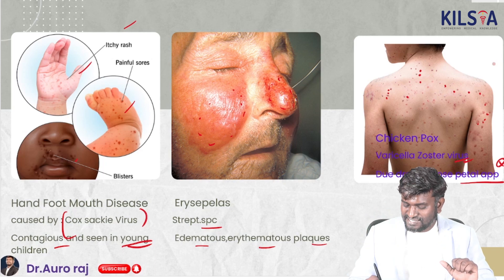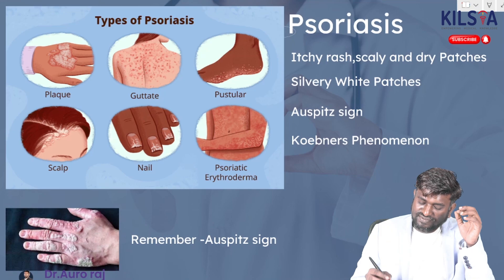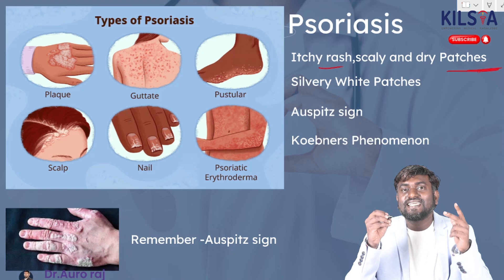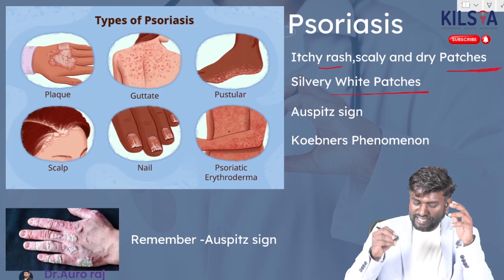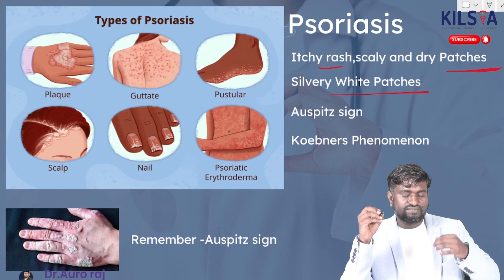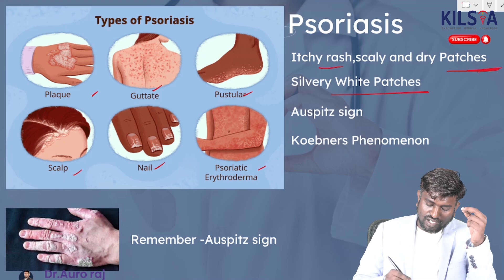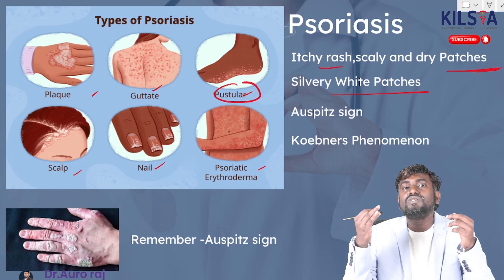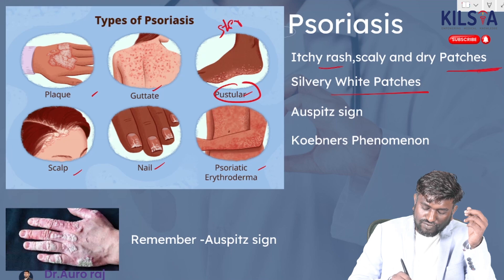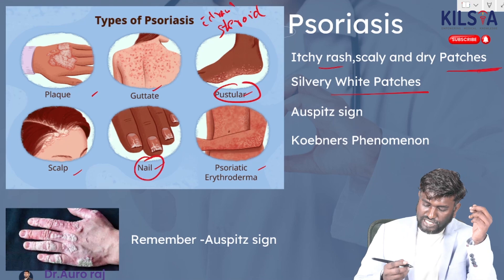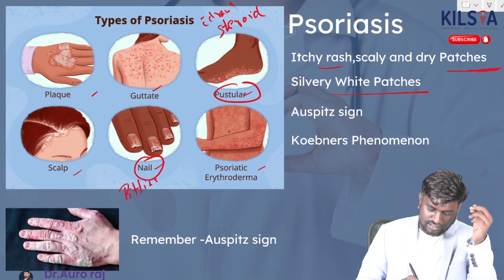Psoriasis is very important. It presents with itchy, scaly, and dry patches with silvery-white plaques. The types of psoriasis include plaque psoriasis, guttate psoriasis, pustular psoriasis, scalp psoriasis, nail psoriasis, and psoriatic erythroderma. Pustular psoriasis is classically due to withdrawal of steroids. In nail psoriasis, you will see pitting and the oil drop sign.